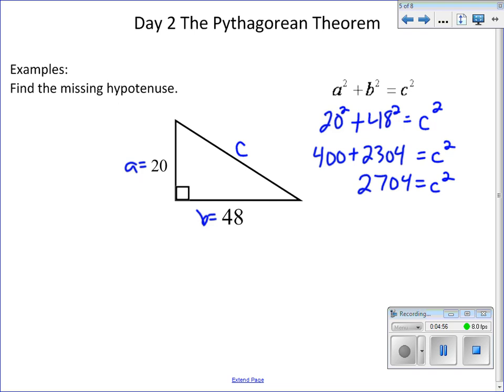Now we're going to use our calculator to find the square root of both sides, because we don't want C squared, we simply want C. The square root of 2,704 gives us 52, so C equals 52.